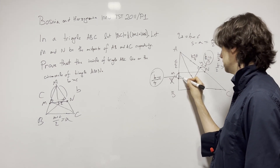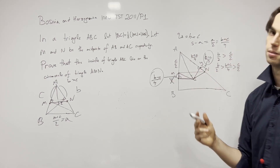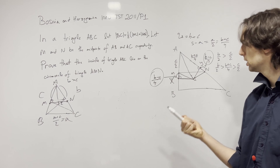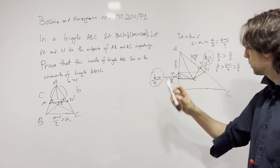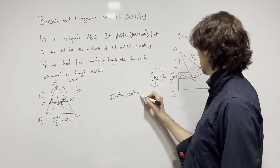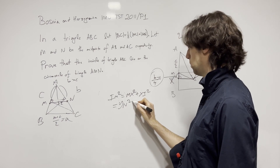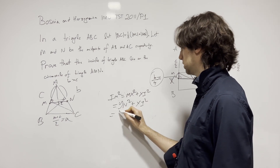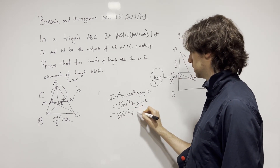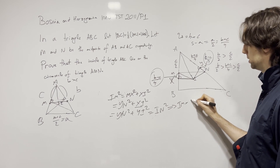Now we say: MX equals NY, we have a 90-degree angle, so by side-angle-side congruency it follows that IM equals IN. Or we can write: IM squared equals MX squared plus XI squared equals NY squared plus XI squared. Since XI equals IY, this equals NY squared plus YI squared, which equals IN squared. So IM equals IN.